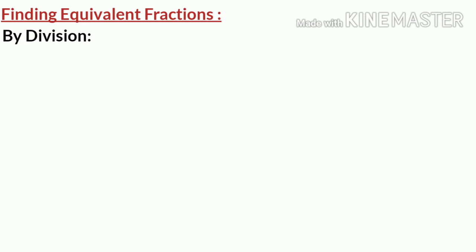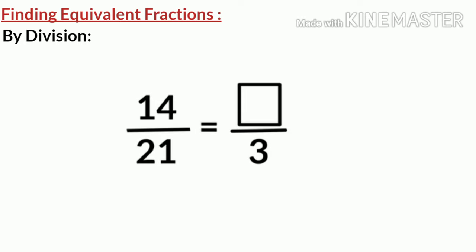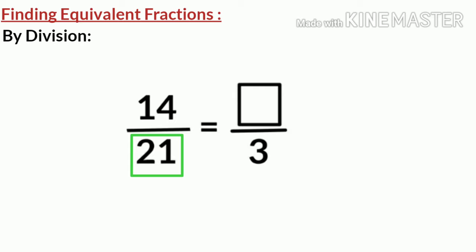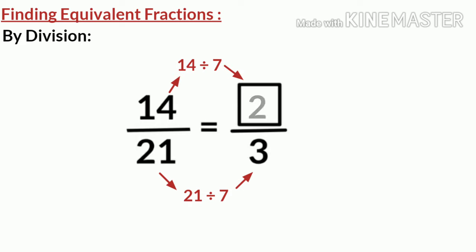Now let's discuss the second method, that is by division. Suppose we have to find the missing number in a given pair of equivalent fractions. Here, 21 is greater than 3 and is also a multiple of 3, and the smaller number is the denominator of the missing number. So, we have to find the number by which 21 is divided to give a quotient of 3. We know that 21 divided by 7 gives 3. So, to find the missing number, we also divide the numerator 14 by 7, and we get the quotient 2. So, the missing numerator is 2.